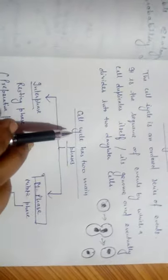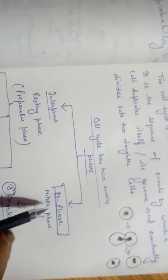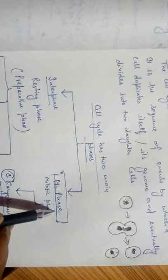What are the main phases of the cell cycle? There are two phases of the cell cycle: the first one is the interphase, and the second one is the mitotic phase, or M phase.